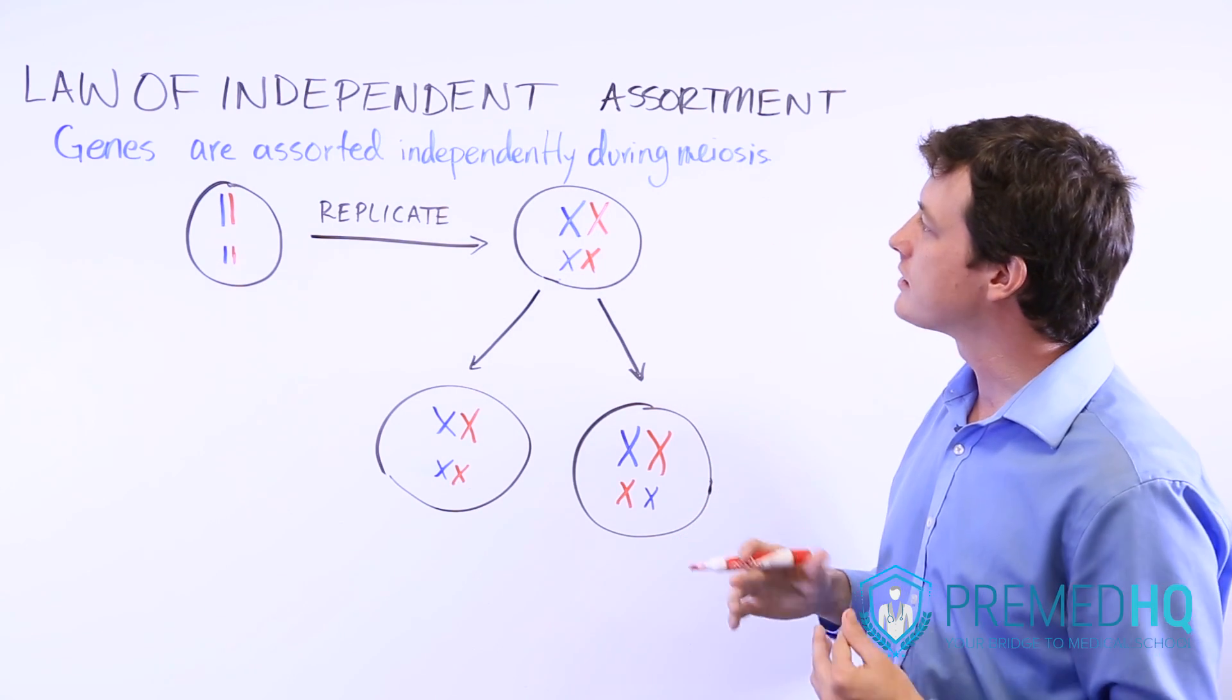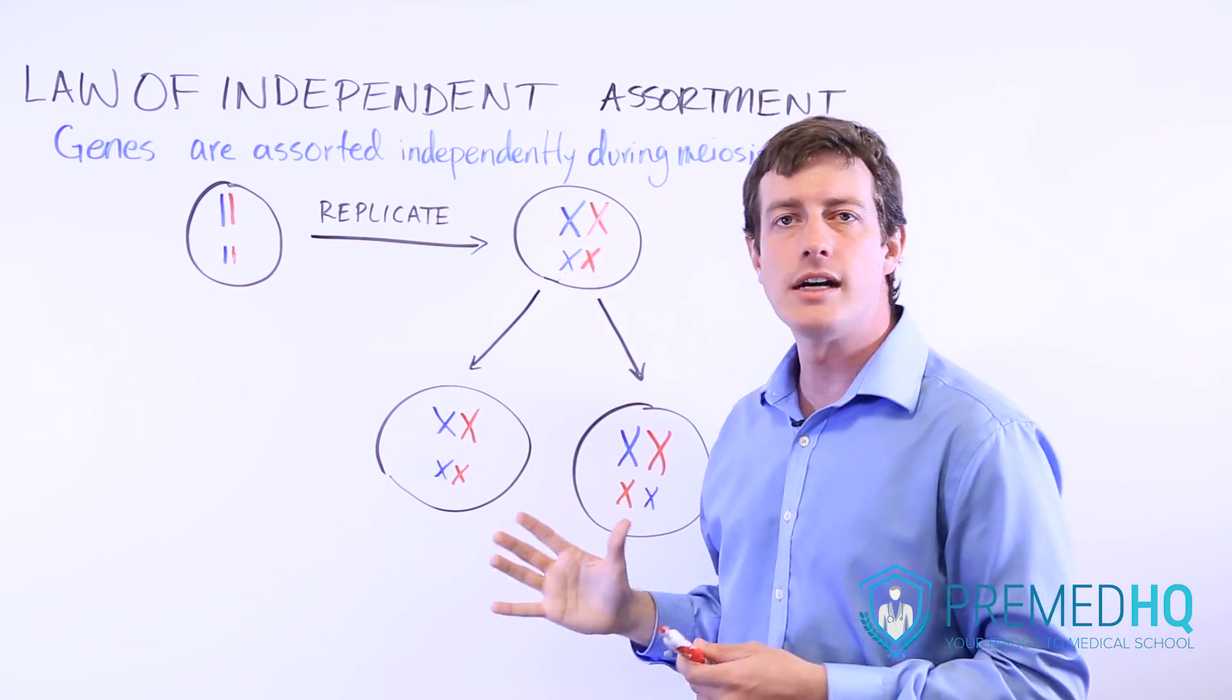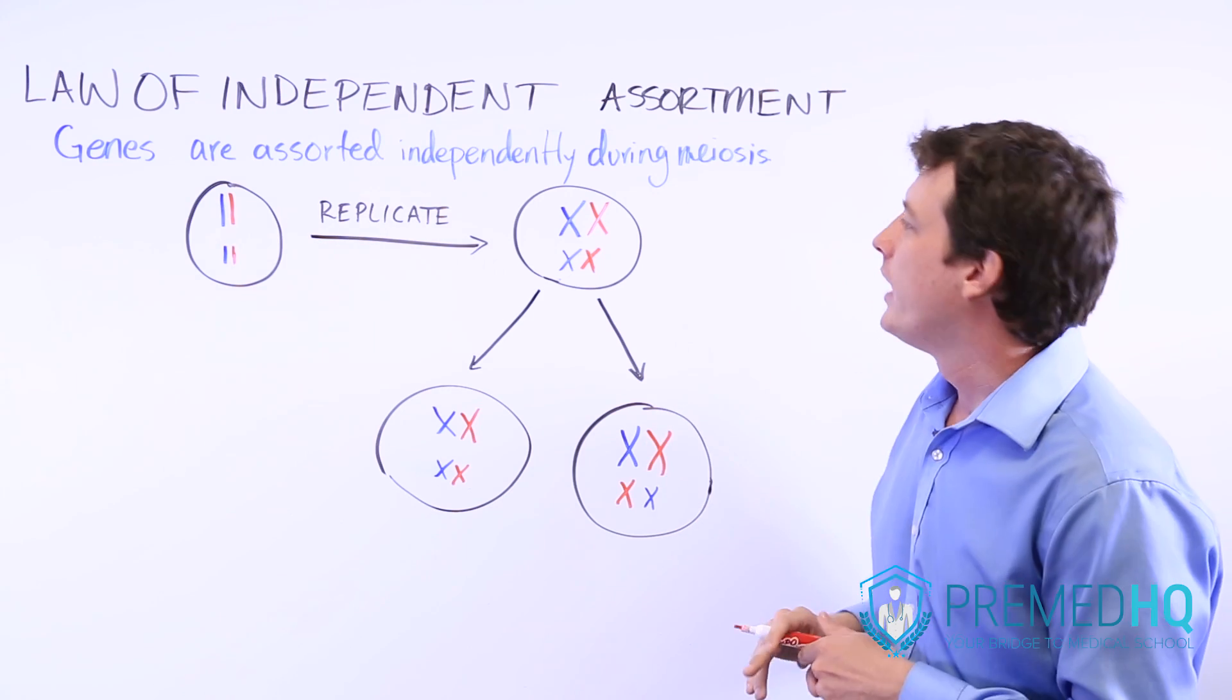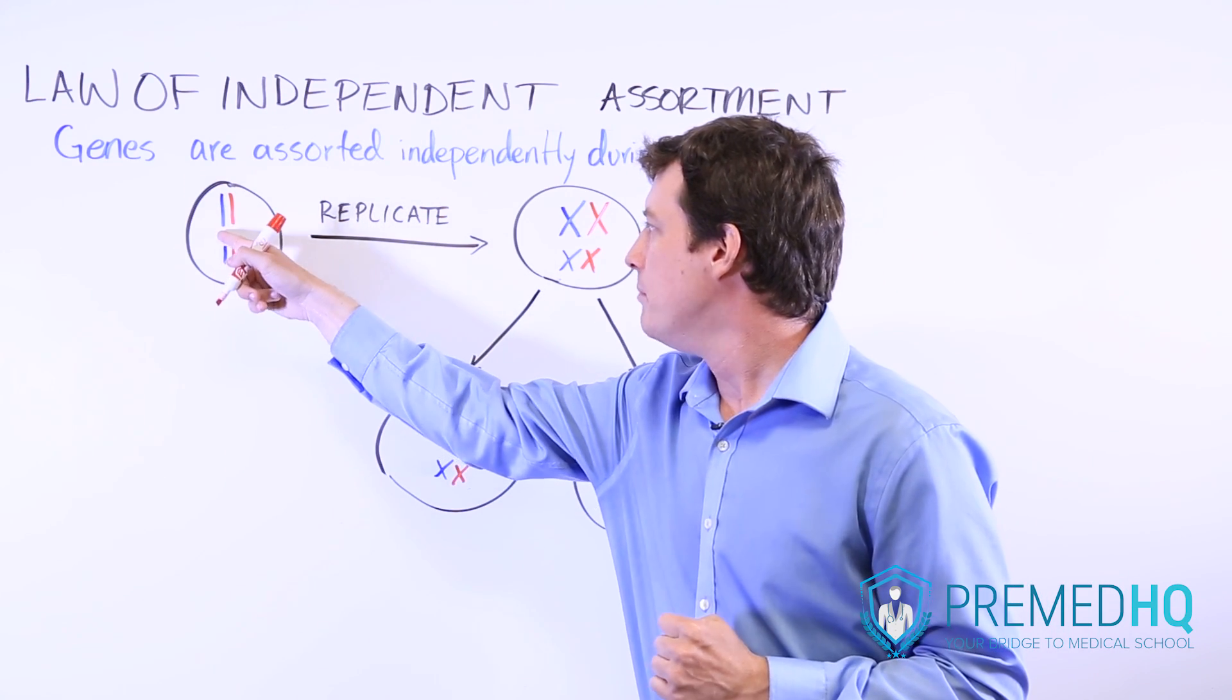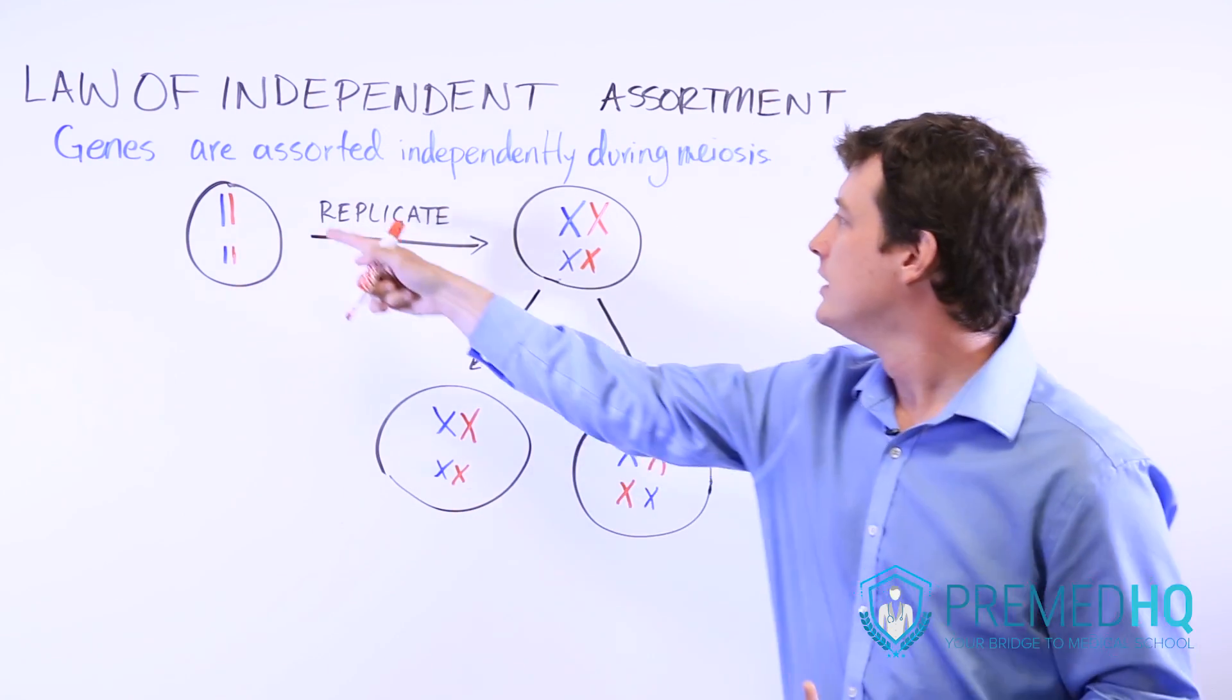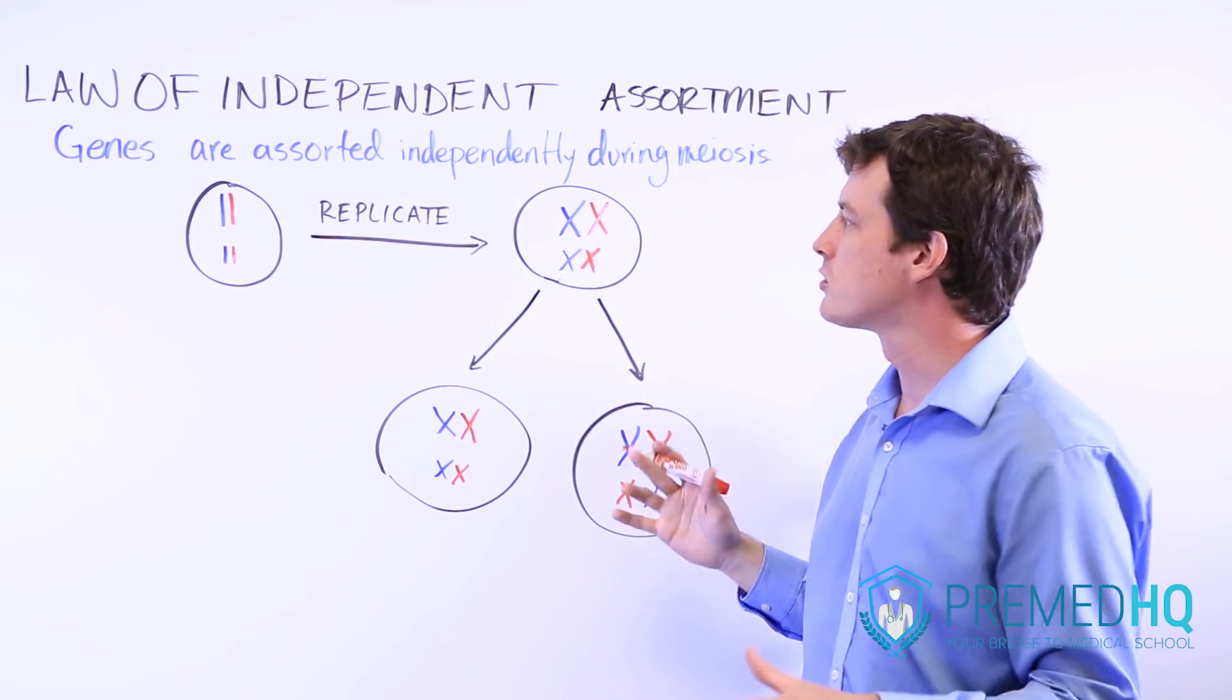And so the way that this works is due to the way that homologous chromosomes line up on the metaphase plate during the first round of meiosis, meiosis 1. And so what happens here is we've drawn the homologues with the blue and red representing the two homologous chromosomes of that pair. We've simplified it into just two pairs of chromosomes so that the illustration is more straightforward.